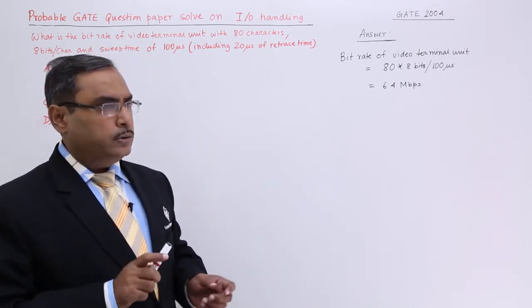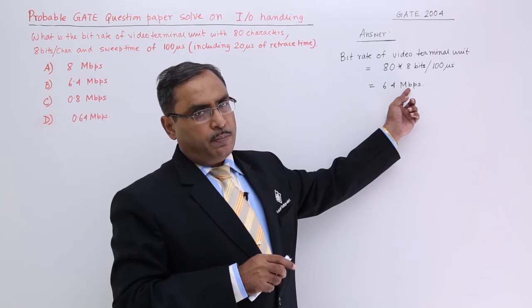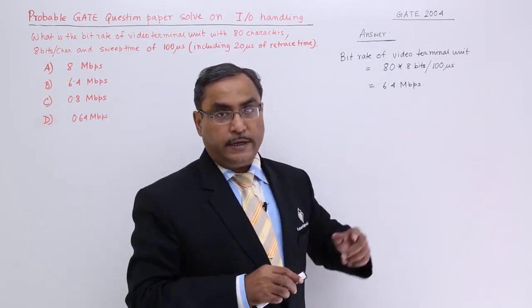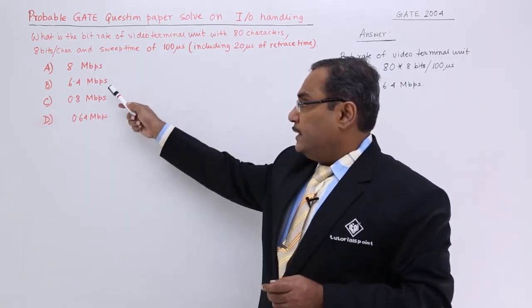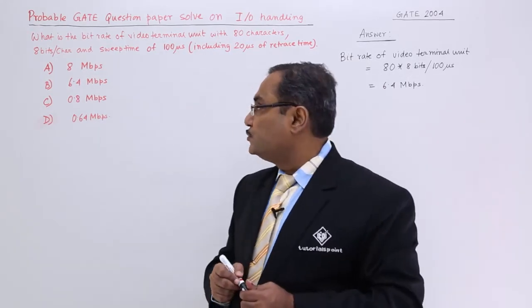Mega bits per second, and we all know that in case of bits the b will be written in the lower case letter. In case of byte the b will be written in the upper case letter. The respective answer I am getting is 6.4 mega bits per second. So option number will be B.